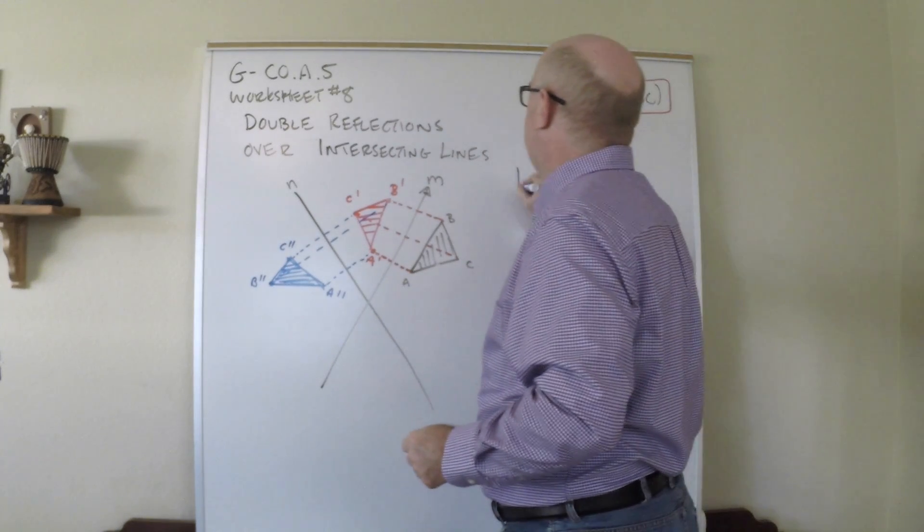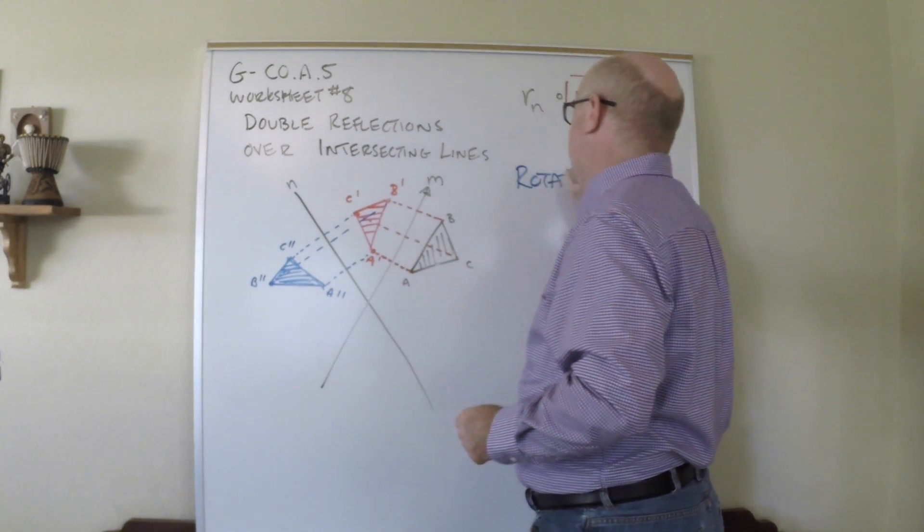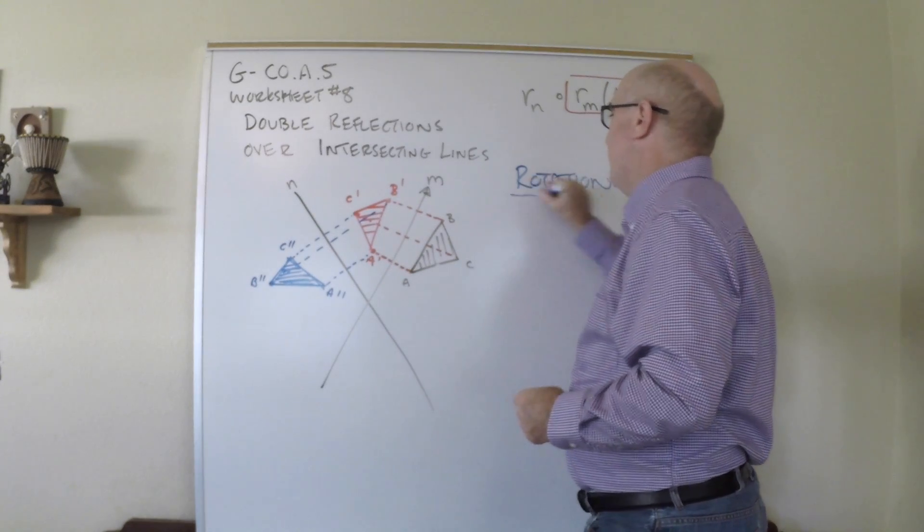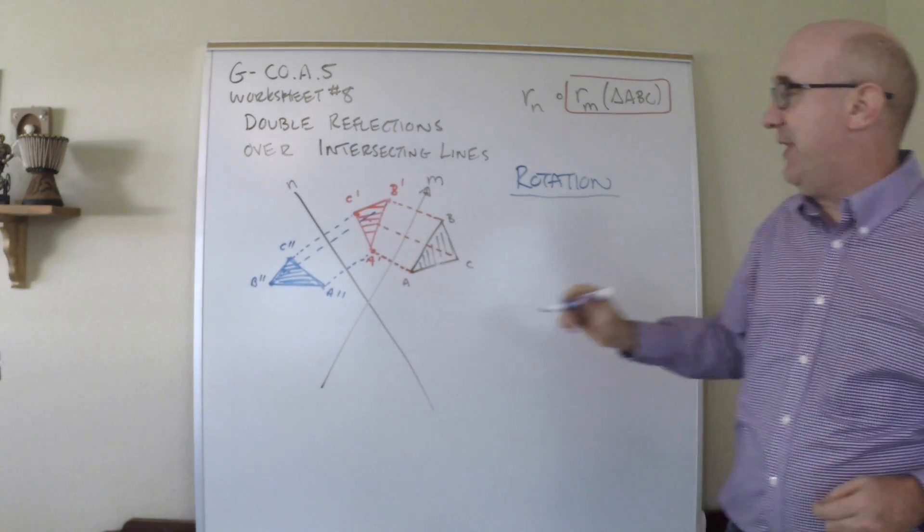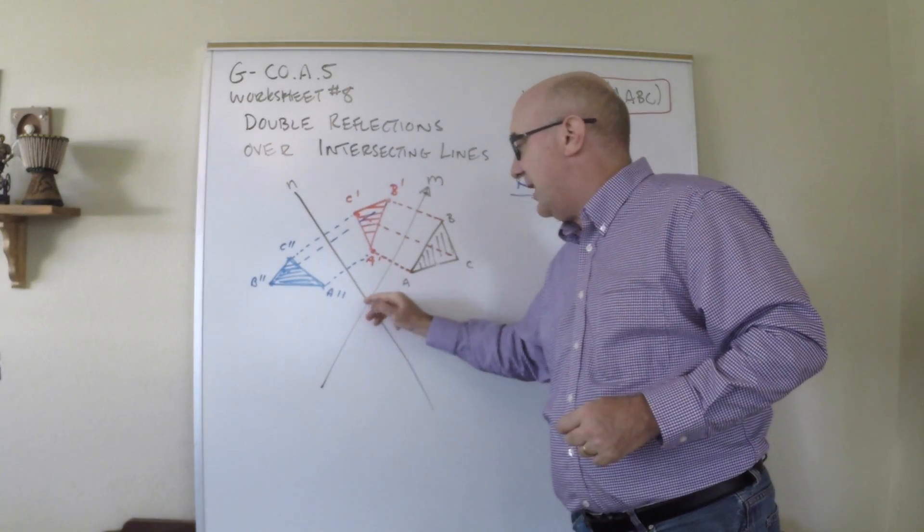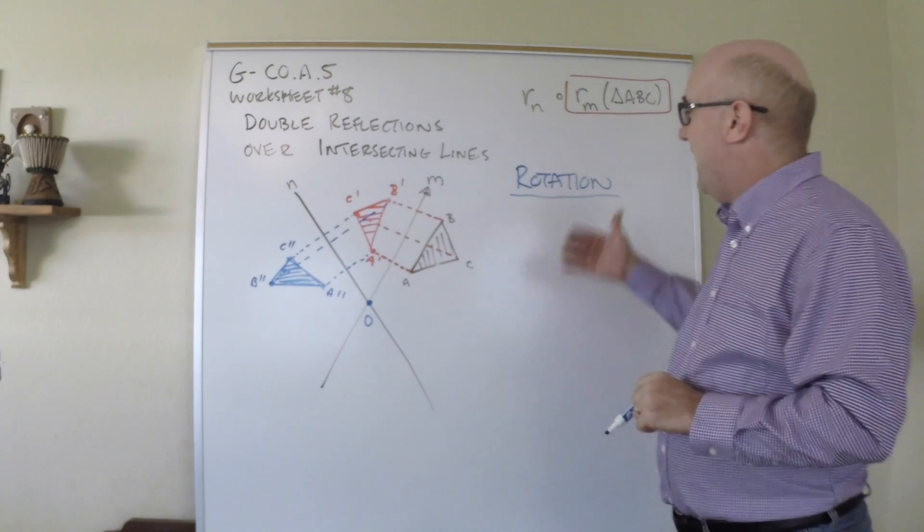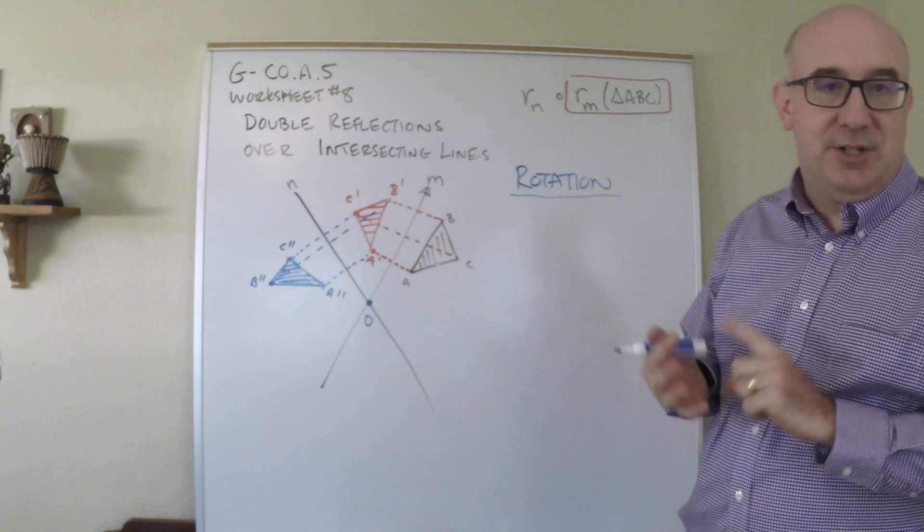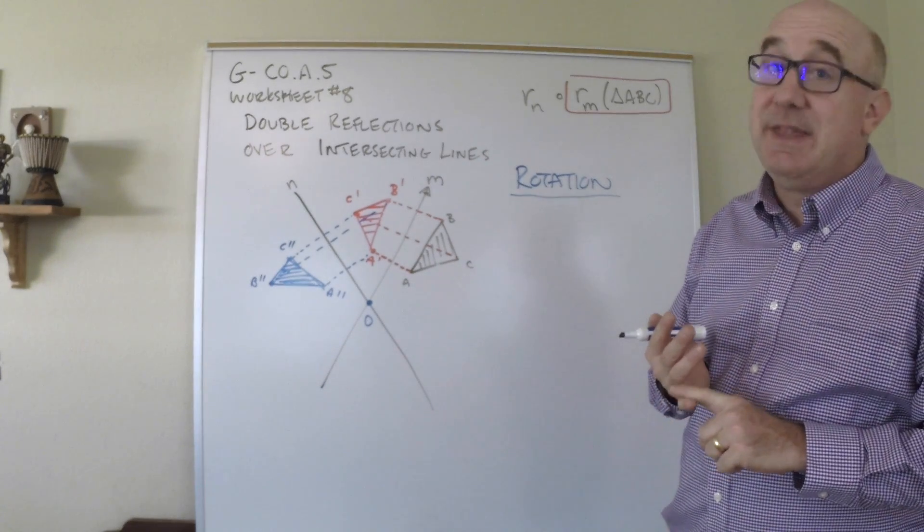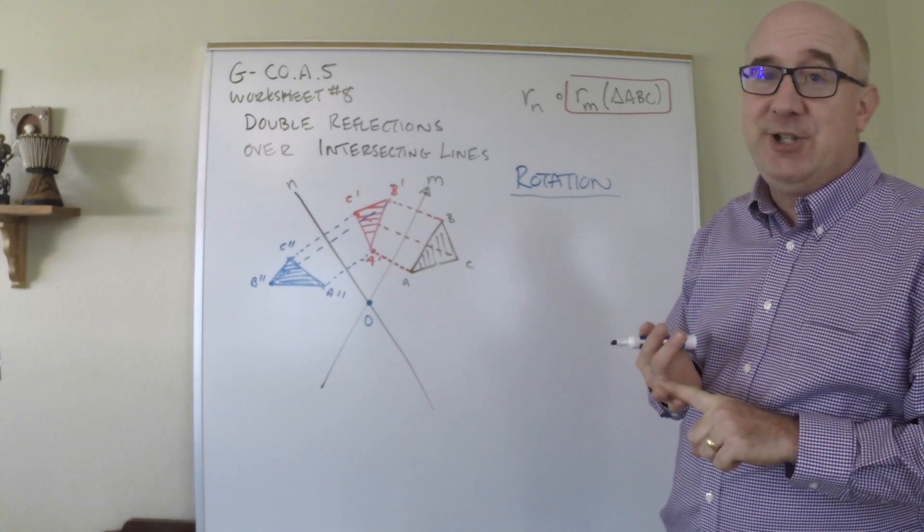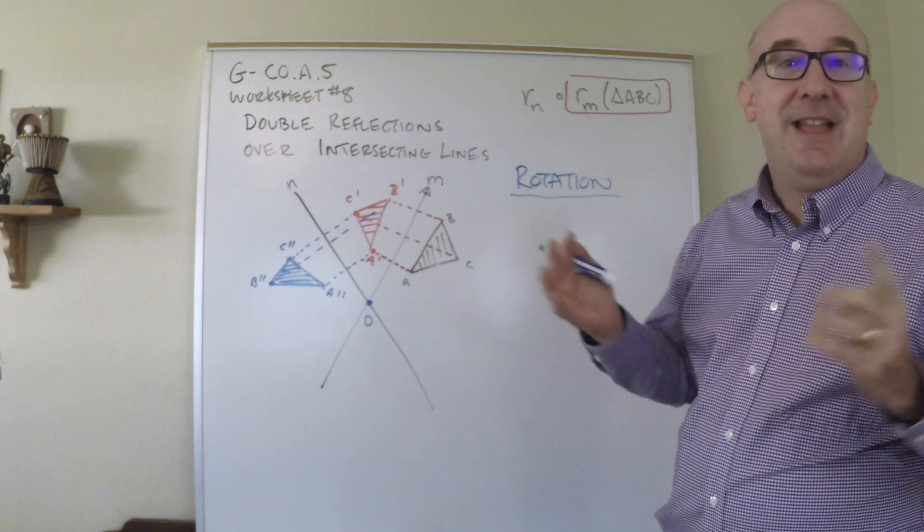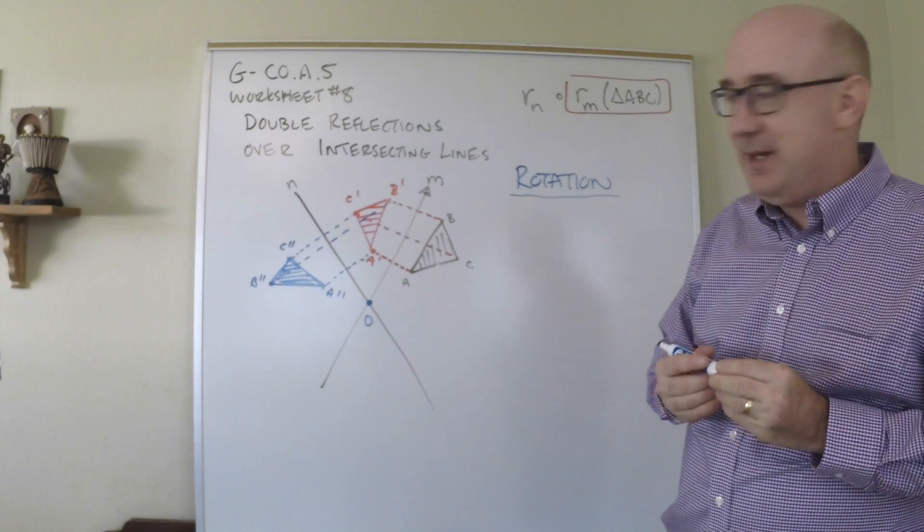This, you can kind of see it has been moved onto its back as it got rotated through there. So a double reflection is a rotation about that point of intersection. So whatever that point is, that's the center of rotation. And we know it has to be a rotation because the orientation is the same, but points travel different distances. That's why we talked about all those properties earlier.